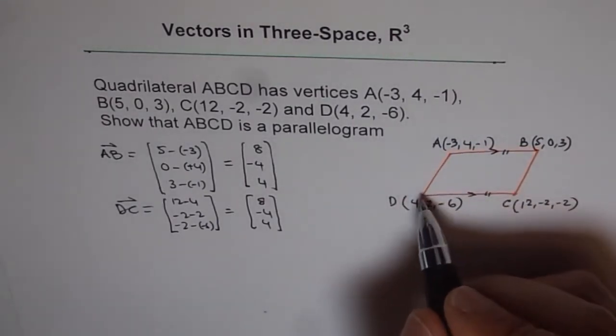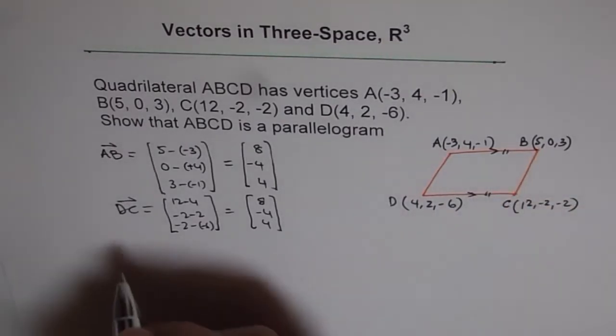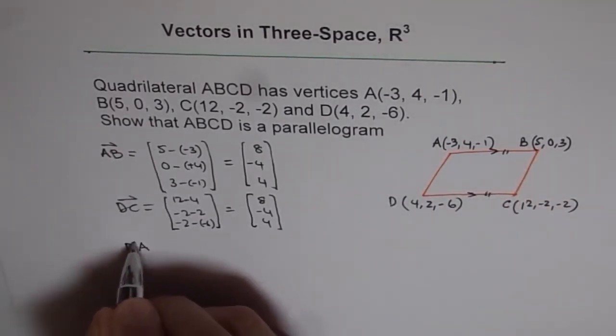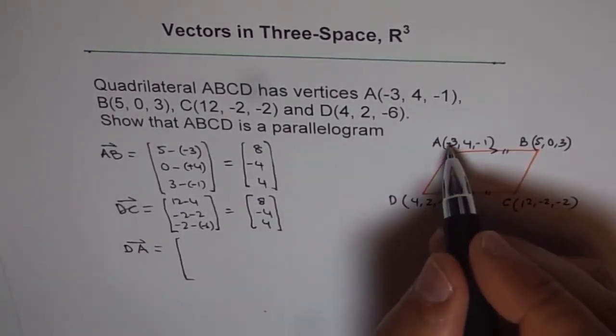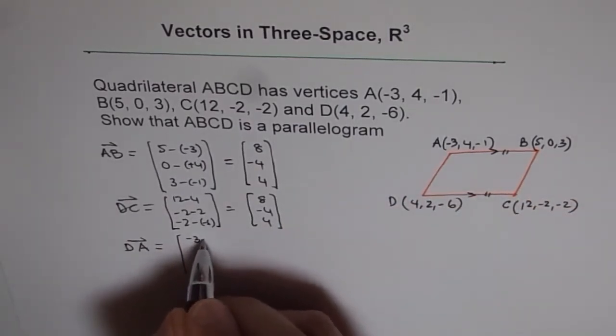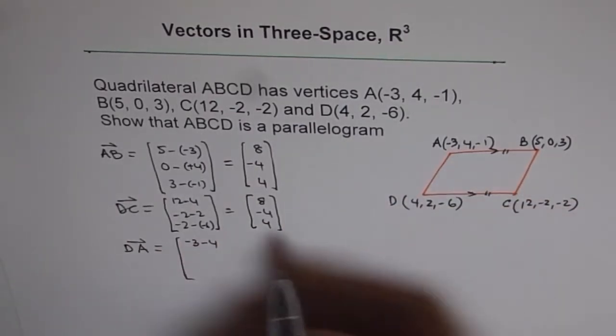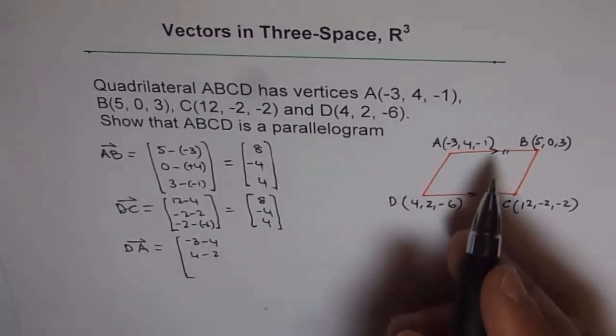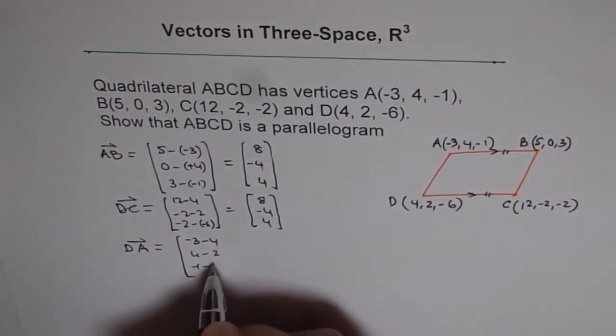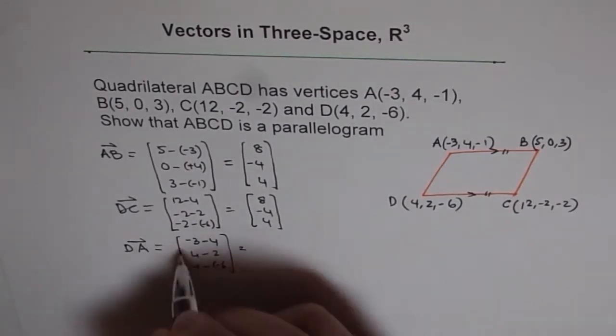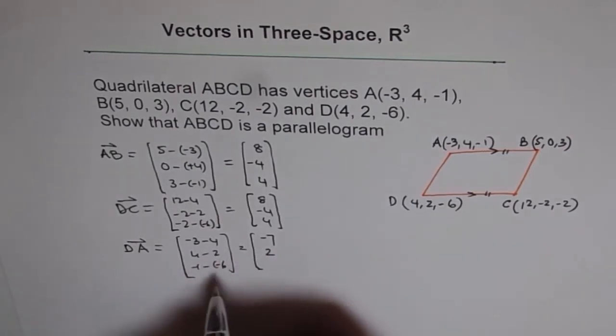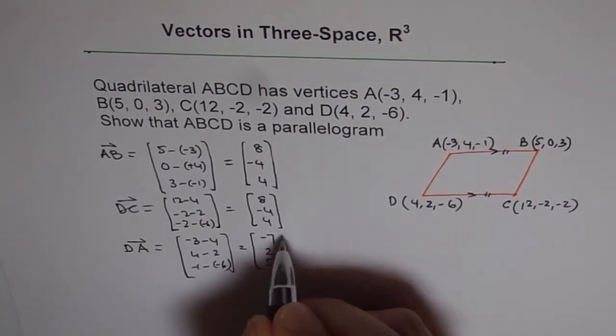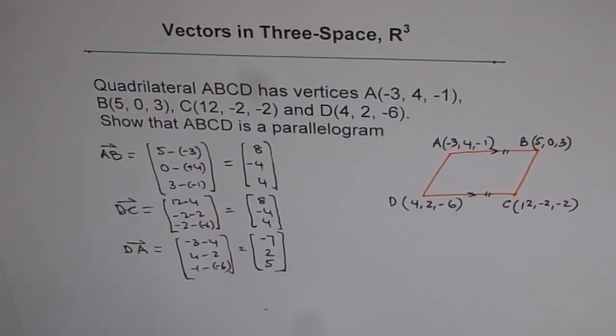Now, we need to prove how about DA and CB. D to A will be -3 minus 4, 4 minus 2, -1 minus (-6). That's -7, 2, and 5.